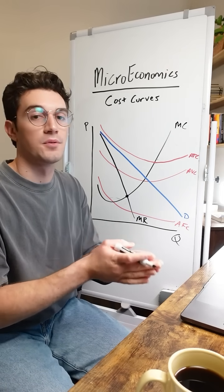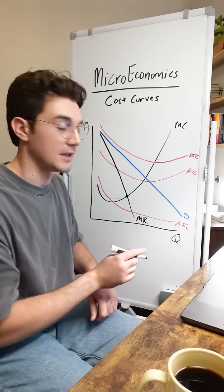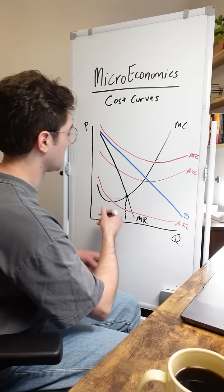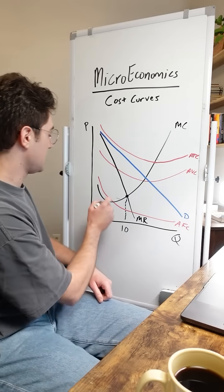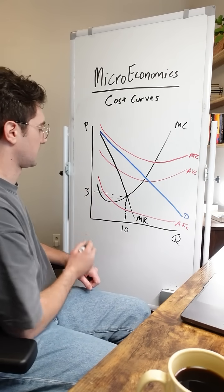Now, when I say they're going to produce at that point, that is just in regards to quantity. So we can basically go down here and determine that this firm will say it will output 10 units. But that does not mean that we're going to just go to the left and say, all right, they're going to sell it at three bucks a pop.